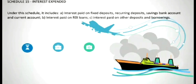In Schedule 15, Interest Expended is to be recorded. Under this schedule, it includes interest paid on fixed deposit, recurring deposit, saving bank account and current account, interest paid on RBI loans, and interest paid on other deposits and borrowings.